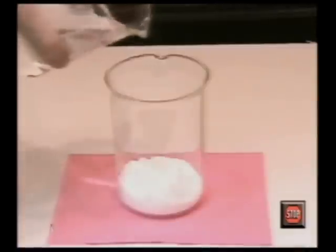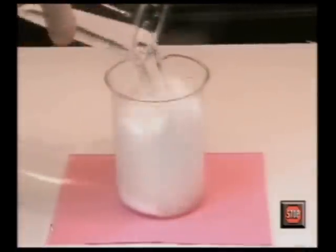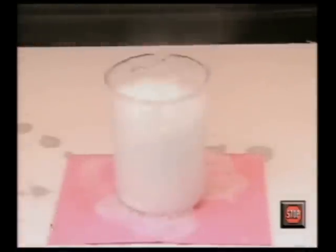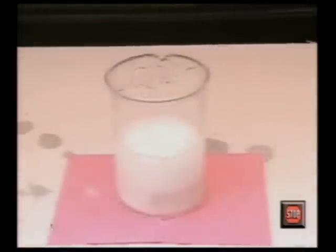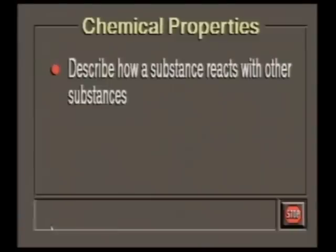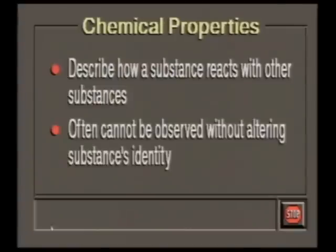Chemical properties describe how a substance reacts with other substances. Chemical properties cannot be observed without altering the identity of the original substance.